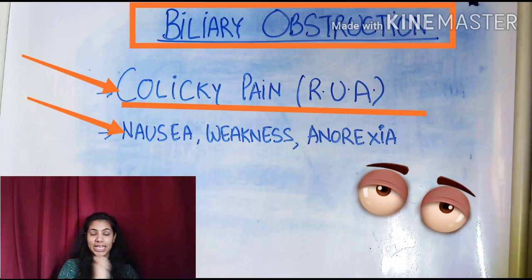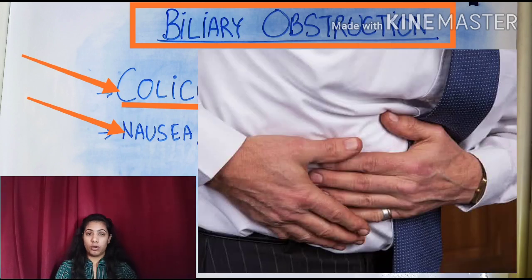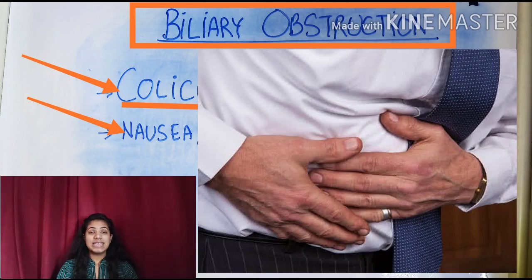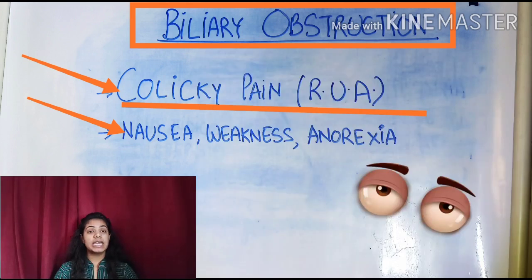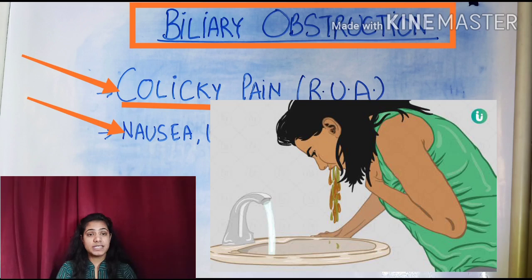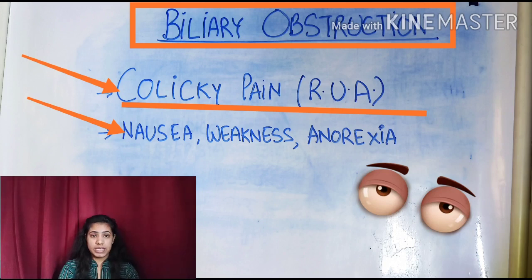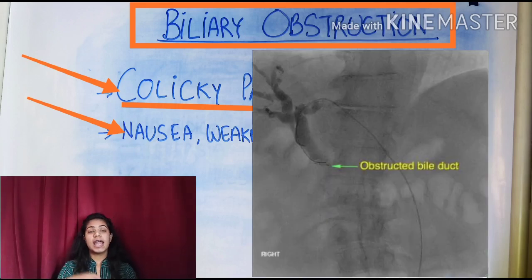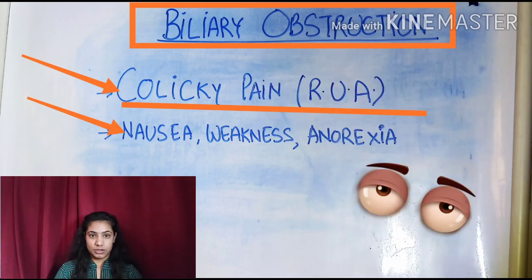When we differentiate biliary obstruction from hepatomegaly, the patient will feel colicky pain in the right upper abdomen — the site of the liver and gallbladder. That colicky pain will be the major complaint. The patient will also have nausea, GI upset, and vomiting, along with possible edema. When biliary obstruction is suspected, we can proceed to radiographic examinations and X-rays and other tools to diagnose biliary obstruction more accurately.